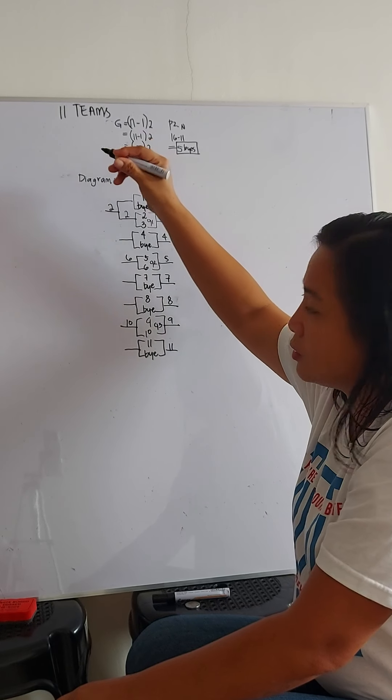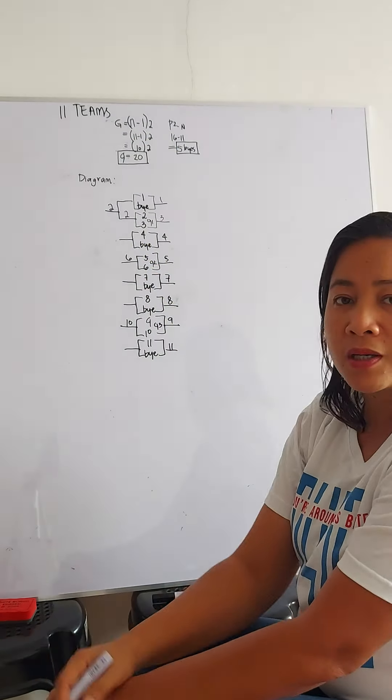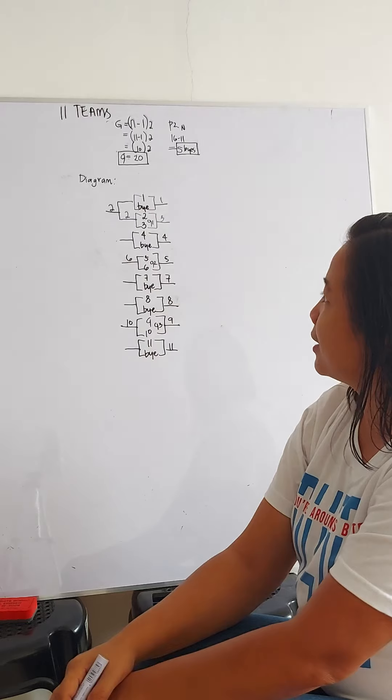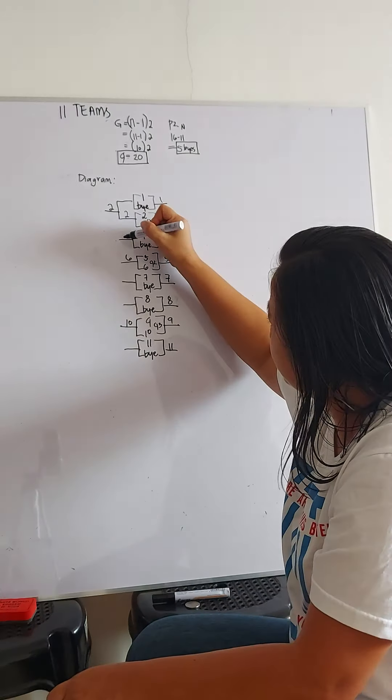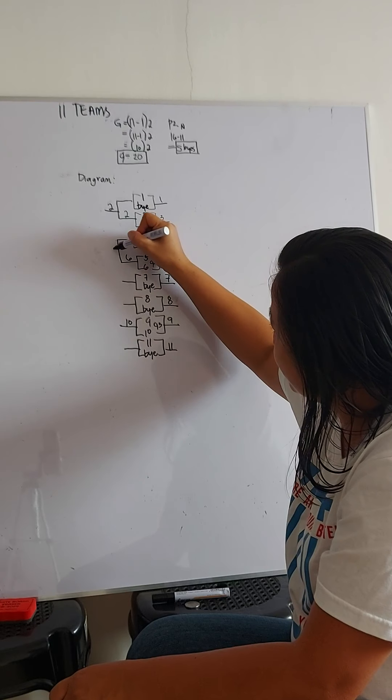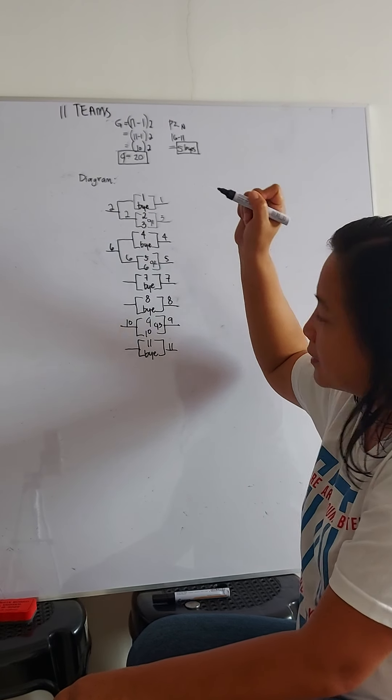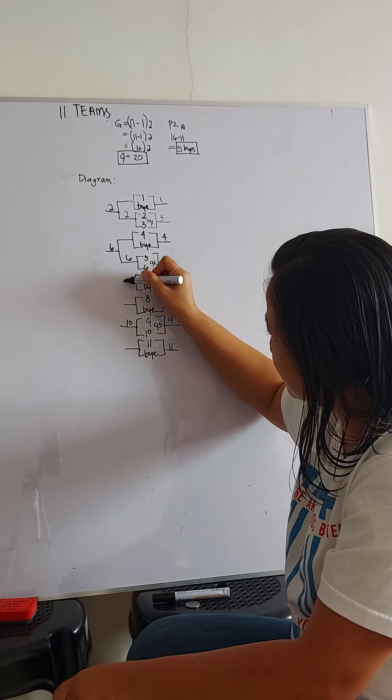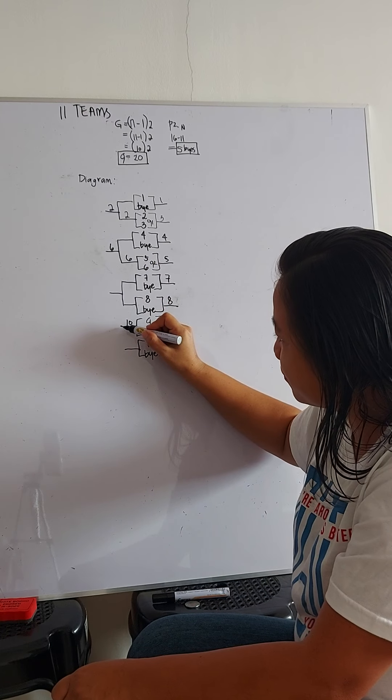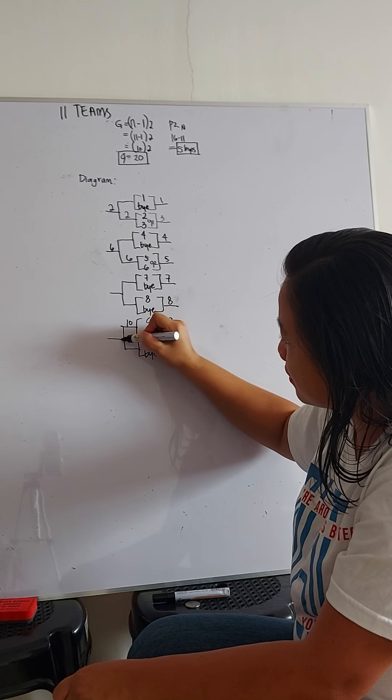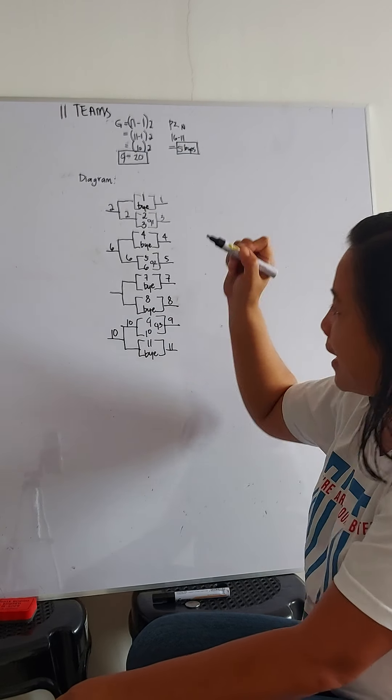Let team 2 to be moved to the next round, meaning that 2 is waiting for the other team to come. So, as with team 6, in here, we do not have representative or team. The same here, 10.